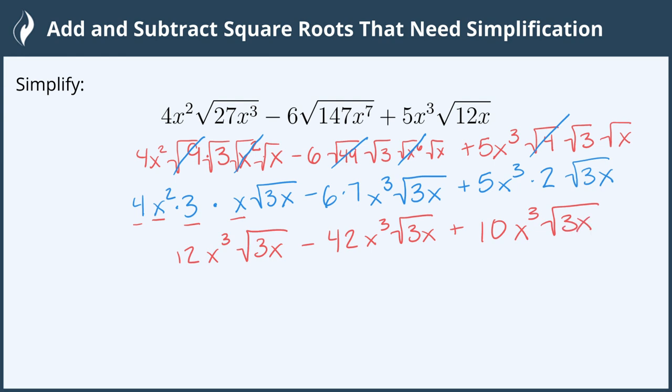These are all the same variable makeup or like terms. So we can go ahead and simplify this by taking 12 subtracting 42 and adding 10.